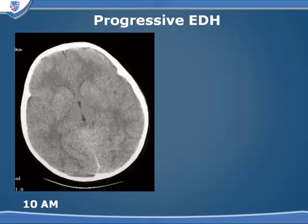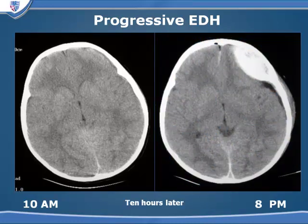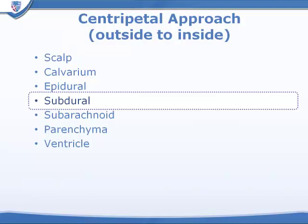Doing an imaging study is taking a snapshot in time, and the disease process may change. At 10 o'clock in the morning, this child was neurologically intact, but 10 hours later at 8 p.m., the patient had an expanding epidural hematoma now causing some slight midline shift and a little bit of herniation. So things can change over time.